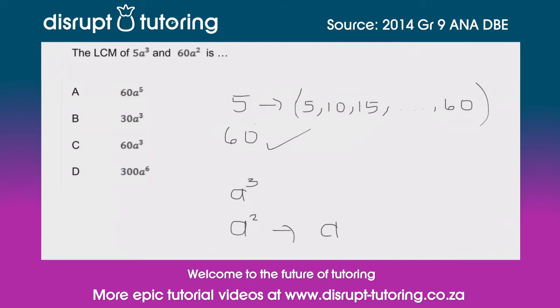We know that if we multiply a² by another a, we would get a³. That would therefore lead us to believe that a³ is the lowest common multiple between a² and a³.